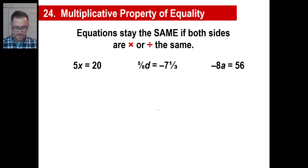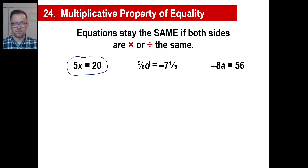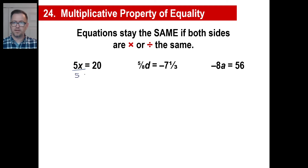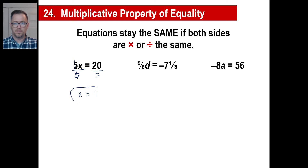Let's do this one first. How many x's do we want? We don't want five of them — we want one of them. Right now, there are five x's. We need to divide by five. If we divide by five on the left side, we must divide by five on the right side. Five divided by five is just one, so we have an x. Now x is equal to 20 divided by five, and that's four.